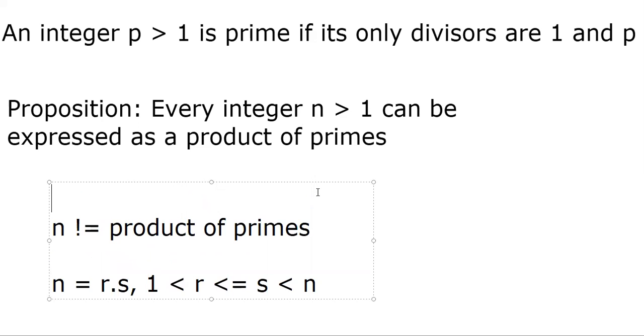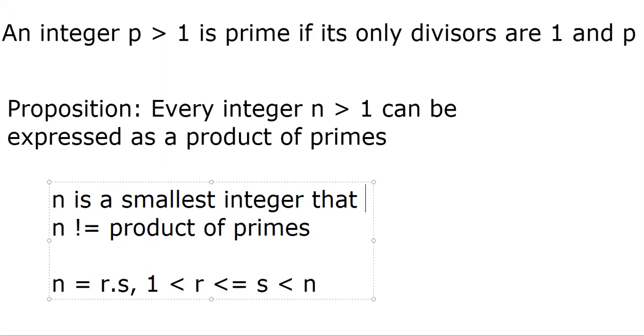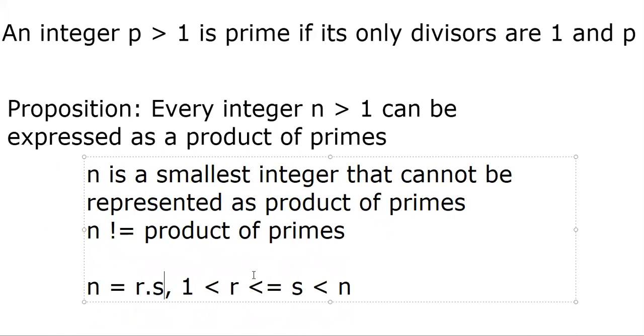n is a smallest integer that cannot be represented as a product of primes. And we say n is the smallest integer that cannot be represented. Doesn't mean anything below n cannot be represented. So this implies basically that r and s being both smaller than n should have prime factors, because we assume n is the smallest number that cannot be represented as product of primes.